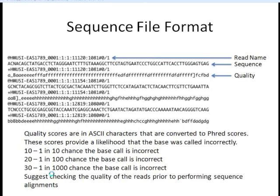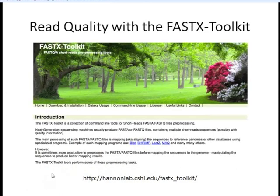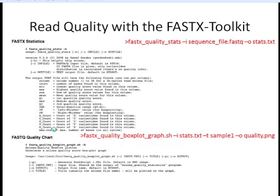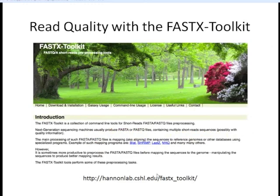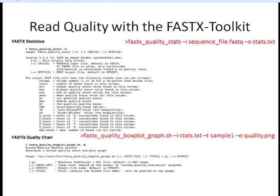Before doing any aligning, I suggest checking the quality of your next-generation sequence data to see if it's of good enough quality to trust your alignments. We can use a program called the FASTX Toolkit. This program has scripts to check quality and do subsequent trimming if necessary based on what the quality plots look like. It's available for download at the website shown. We won't go through all the programs in the FASTX Toolkit, but we'll talk about using them to look at the quality of reads within a library.